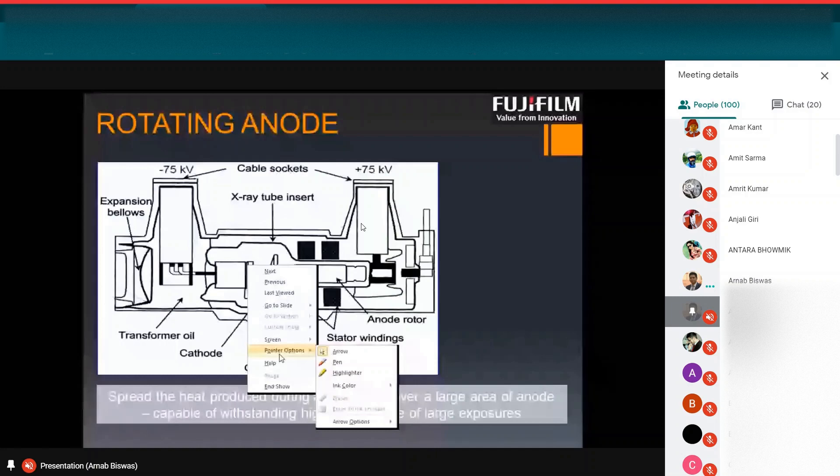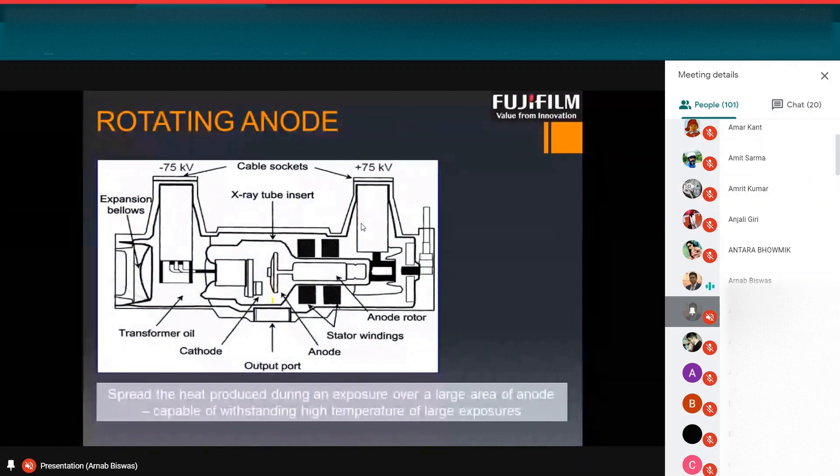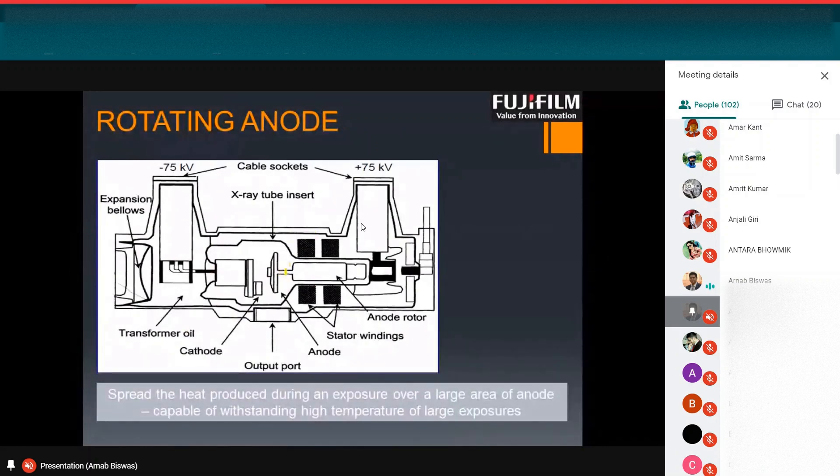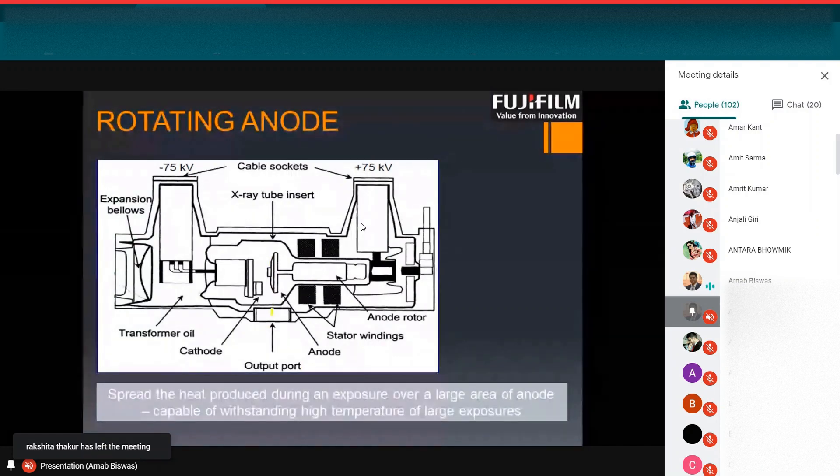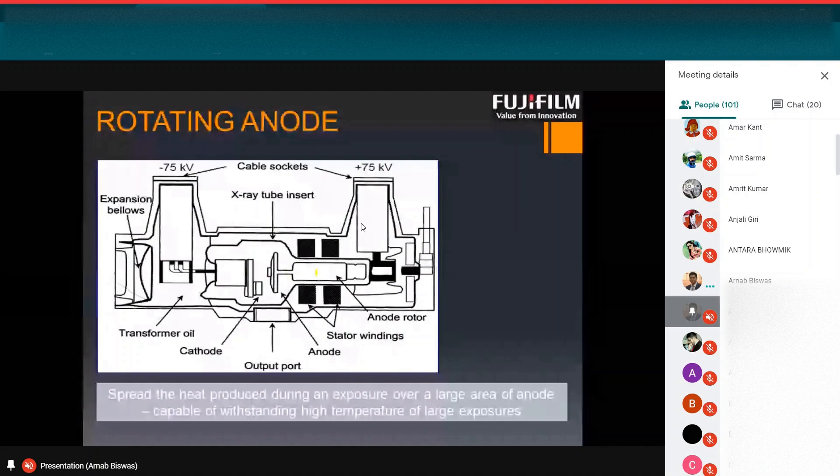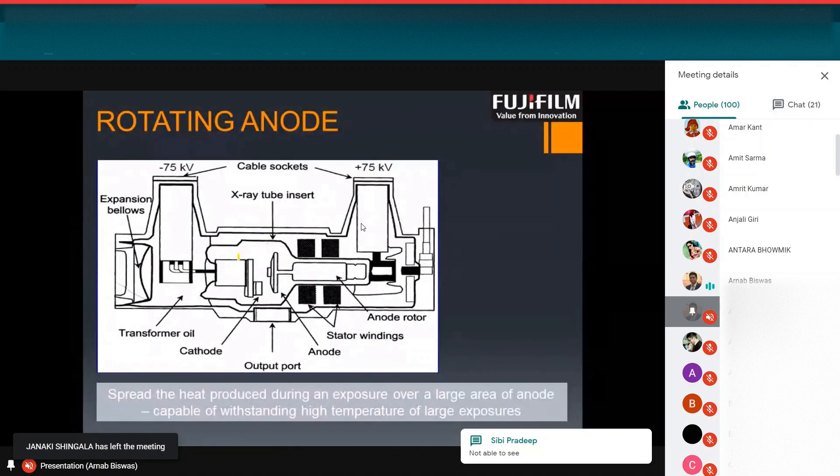Here you can see, this is the anode target and this is the cathode end, where these things have been placed inside an evacuated glass. This anode is connected with an anode rotor, which is the induction motor to rotate the anode. This is the output port. Here transformer oil is used as a coolant because enormous heat is generated inside this tube. And in both sides, a high voltage electric source is connected in both sides of cathode and anode.